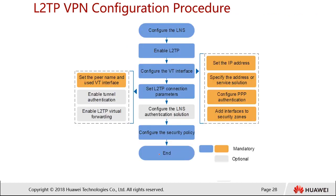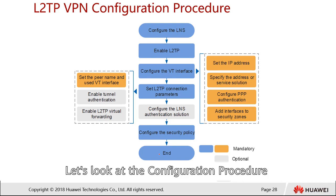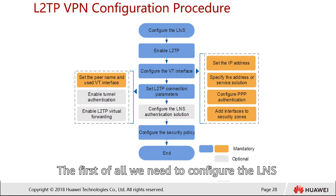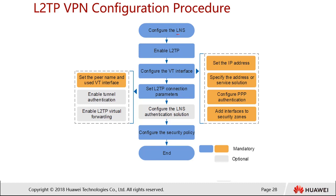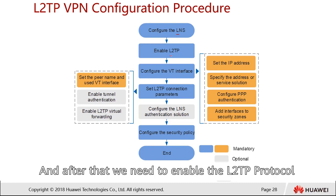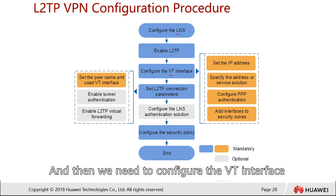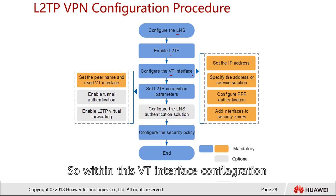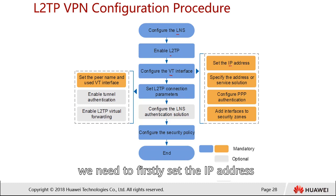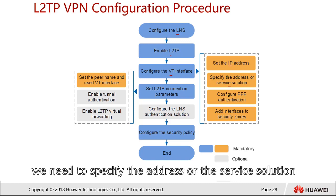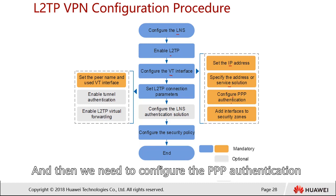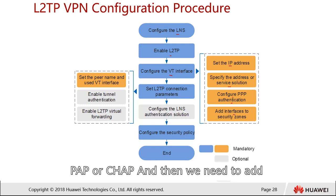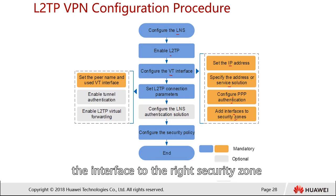Let's look at the configuration procedure. First, we configure the LNS, which is the firewall, then we enable the L2TP protocol, and then configure the VT interface — the virtual template interface. Within the VT interface configuration, we need to set the IP address, specify the address pool or service solution, and configure PPP authentication using PAP or CHAP. Then we add the interface into the correct security zone.